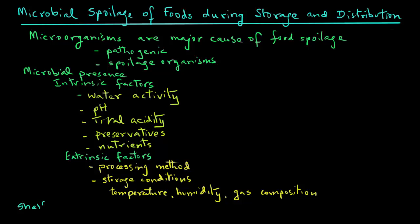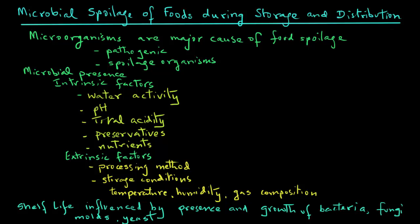The physiological factors also play a role in the proliferation of microorganisms. The shelf life of perishable foods is seriously influenced by the presence and growth of bacteria, fungi, molds, yeast, viruses, as well as parasites. So there are a number of organisms that result in microbial spoilage of foods.